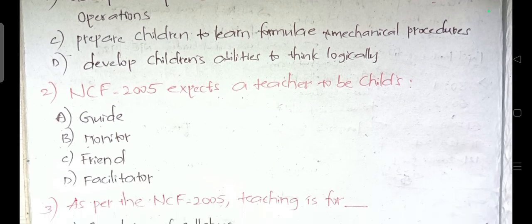Question 2: NCF 2005 expects a teacher to be the child's — Option A: guide; Option B: monitor; Option C: friend; Option D: facilitator. The correct answer is Option D, facilitator.